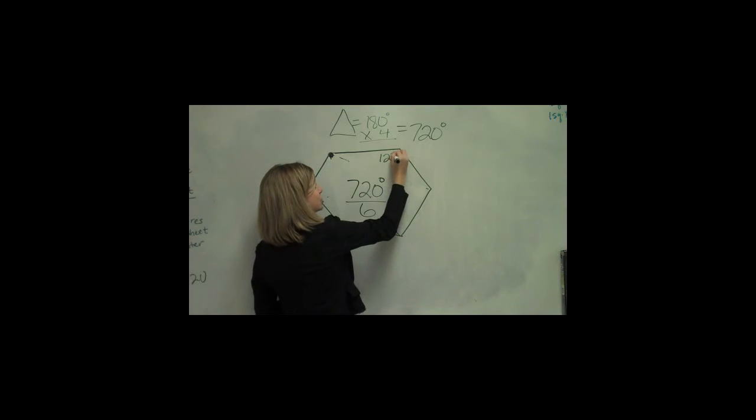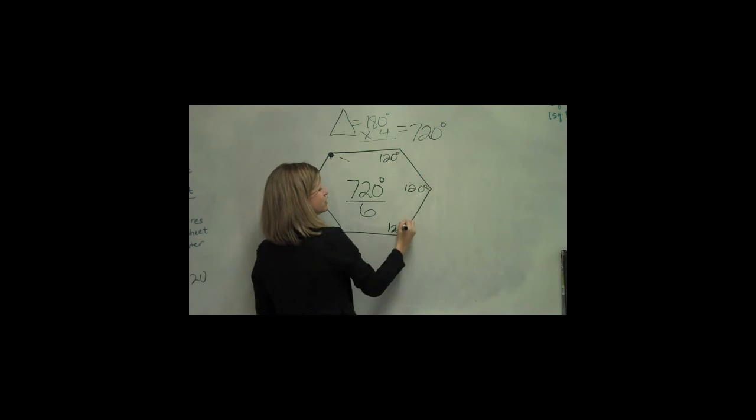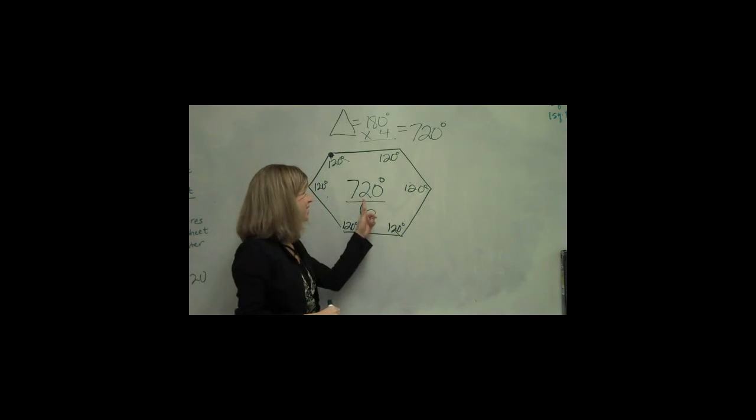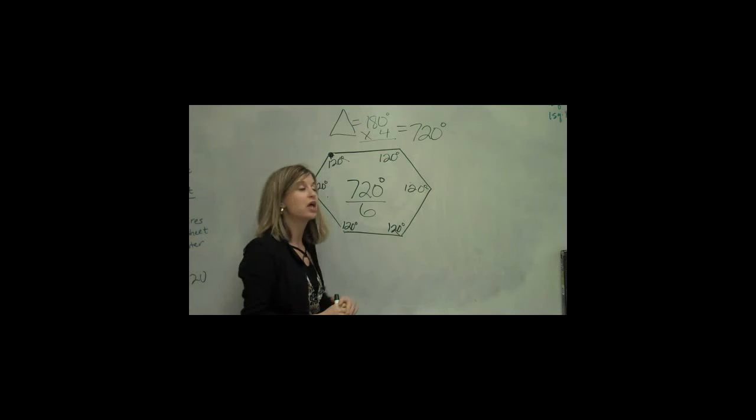So this one is 120 degrees. This one is 120 degrees. This one too, and all of them. So the sum of the interior angles is 720. Each individual angle is 120.